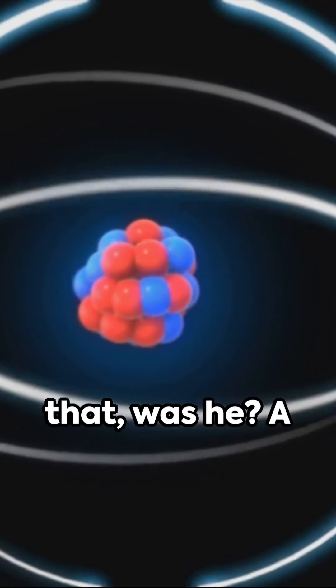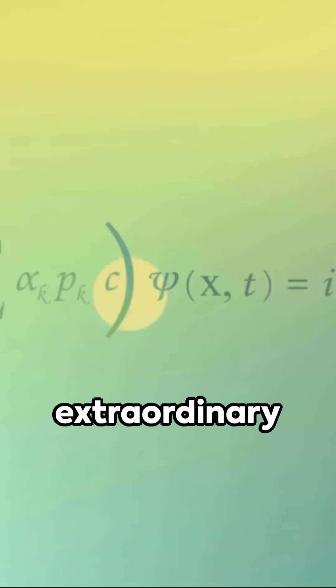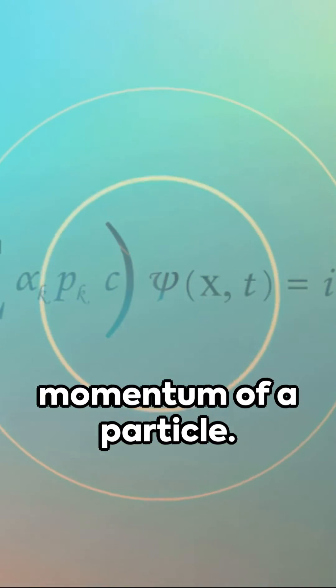Werner Heisenberg wasn't expecting that, was he? A mistaken calculation led to an extraordinary revelation. We can't simultaneously know both the position and momentum of a particle.